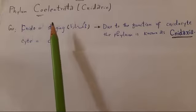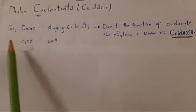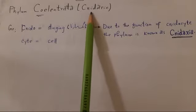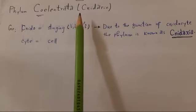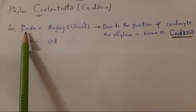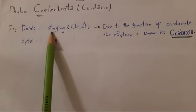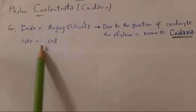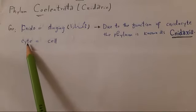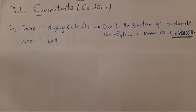As usual, first we will study the naming and meaning of the phylum, and then we will study its characteristics. The word Cnidaria is a combination of two Greek words: 'cnido' means stinging and 'cyte' means cell. The animals of this phylum have specialized stinging cells called cnidocytes, which we will now study in detail with the help of a neat diagram.